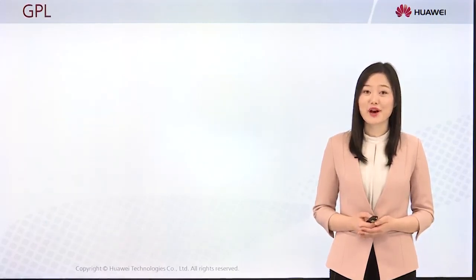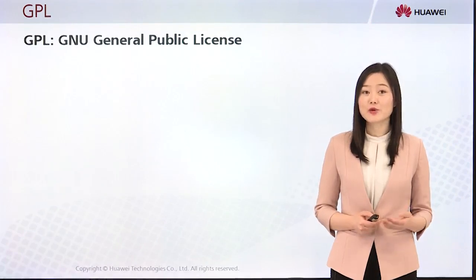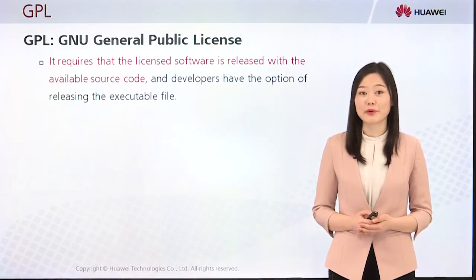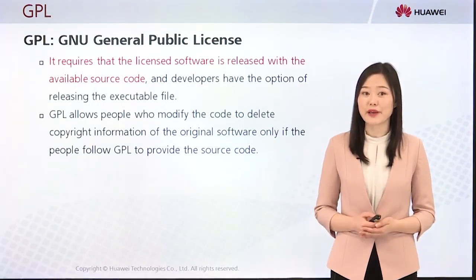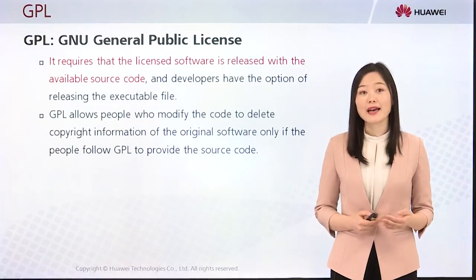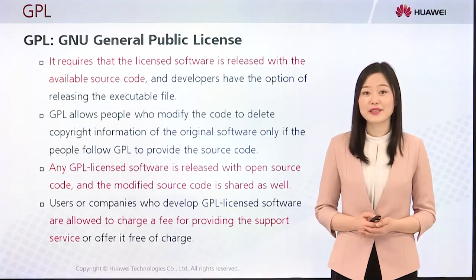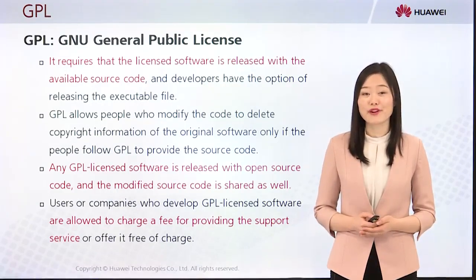Let's learn some details of GPL. GPL is short for the GNU General Public License. It requires that the licensed software is released with available source code, and developers have the option of releasing the executable file. GPL allows people who modify the code to delete copyright information of the original software only if they follow GPL to provide the source code. Any GPL-licensed software is released with open source code, and the modified source code is shared as well. Users or companies who accept GPL are allowed to charge a fee for providing support service or offer it free of charge.